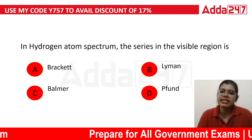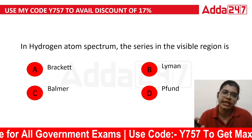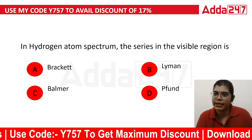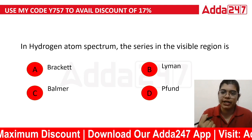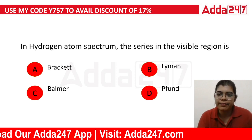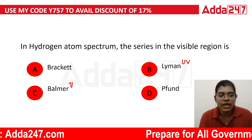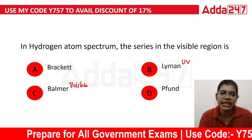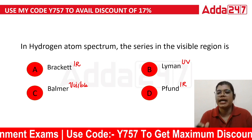In the hydrogen atom spectrum, the series in the visible region is dash. It is the same as the hydrogen atom spectrum. The IR region.